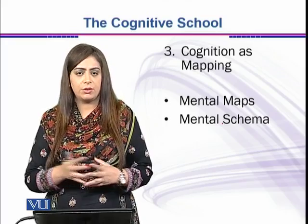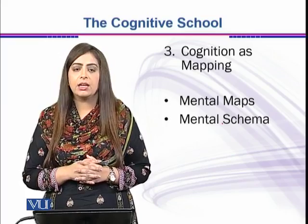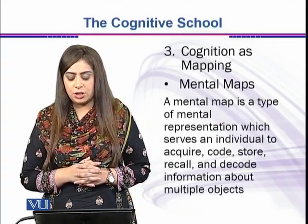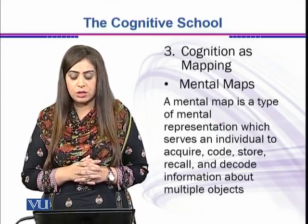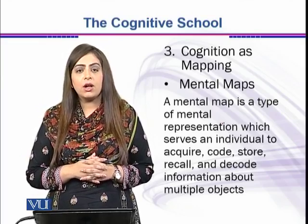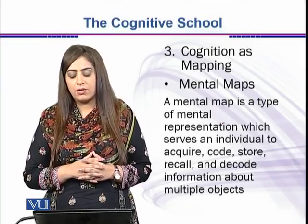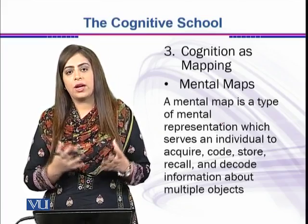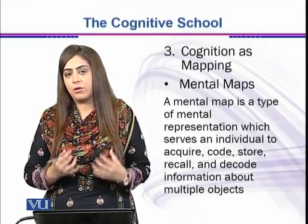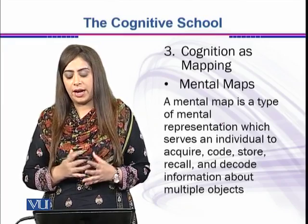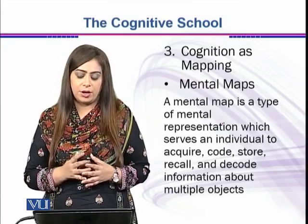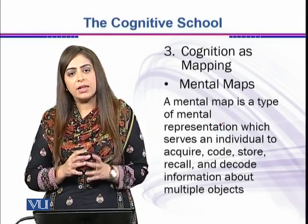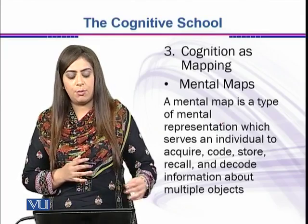The different aspects of mental maps and cognition as mapping have two parts. Number one is mental maps and number two is mental schema. A mental map is a type of mental representation which serves an individual to acquire, code, store, recall, and decode information about multiple objects. Recall that parallel processing model in which we saw that there is multiple and complex information which our mind tries to acquire. When that information is acquired, the brain codes it, stores it, recalls it whenever required, and decodes it whenever action is required by the person. On the basis of this, a mental map is created.